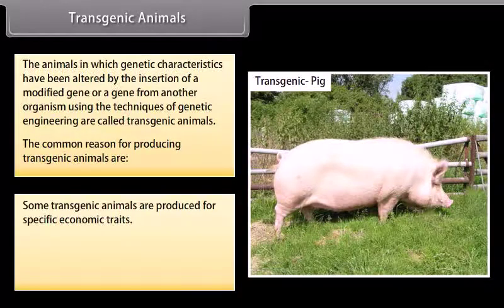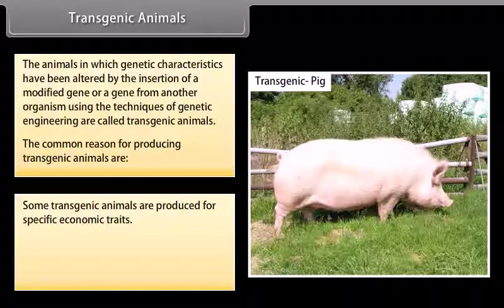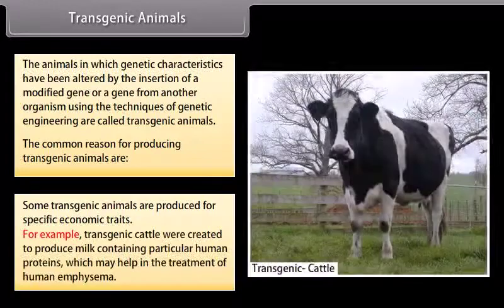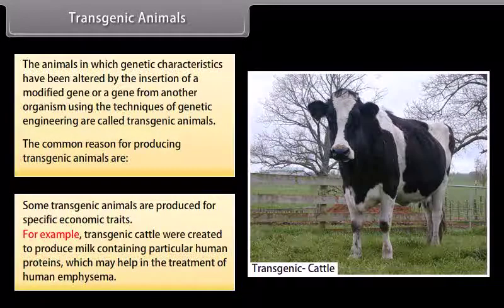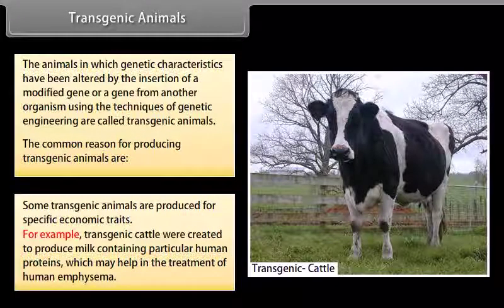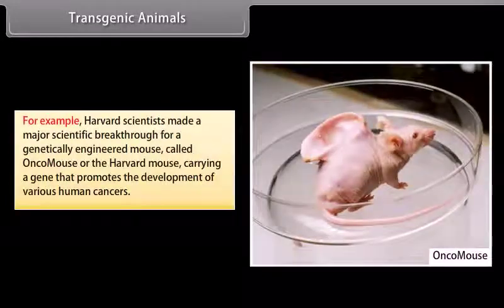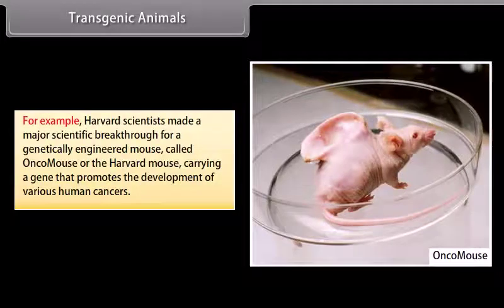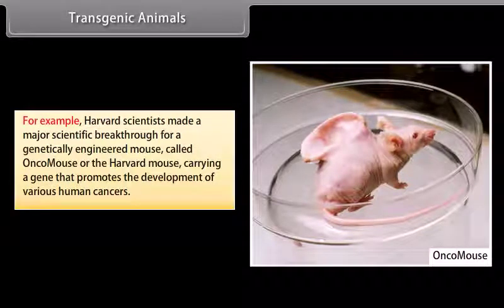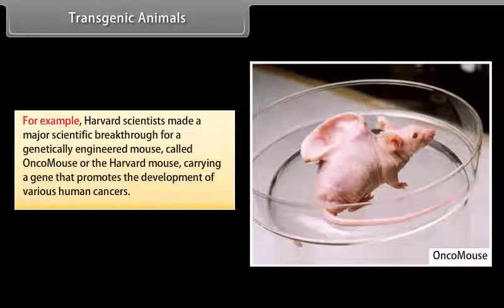Some transgenic animals are produced for specific economic traits. For example, transgenic cattle were created to produce milk containing particular human proteins which may help in the treatment of human emphysema. Harvard scientists also made a major scientific breakthrough with a genetically engineered mouse called Oncomouse, or the Harvard mouse, carrying a gene that promotes the development of various human cancers.